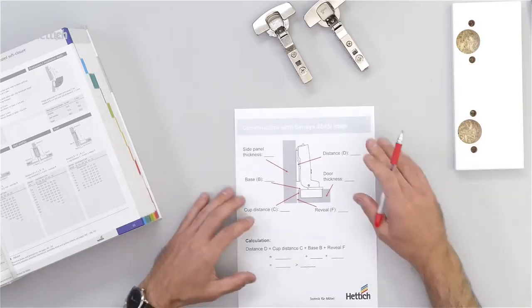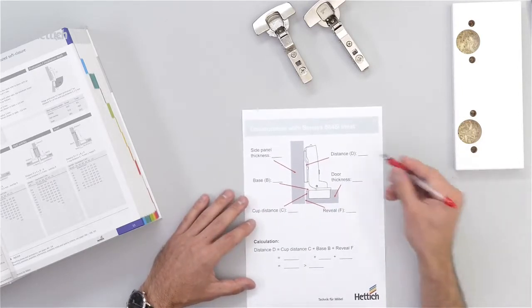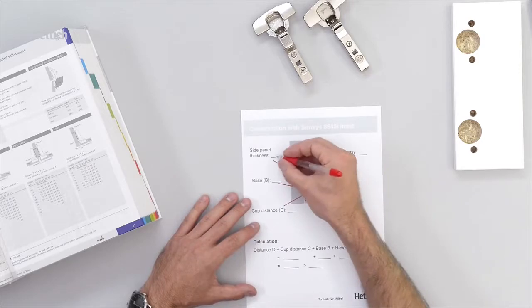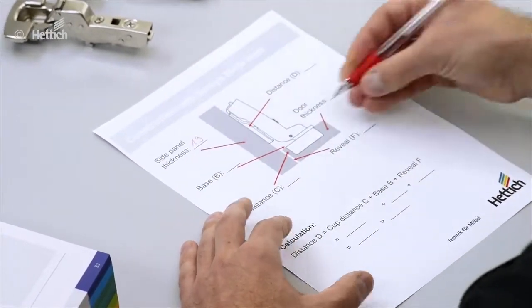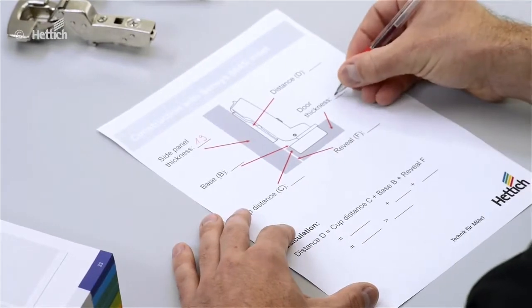So we go to the calculation sheet. The side panel thickness is given, we say 19mm in this example. Also the door thickness with 19mm.